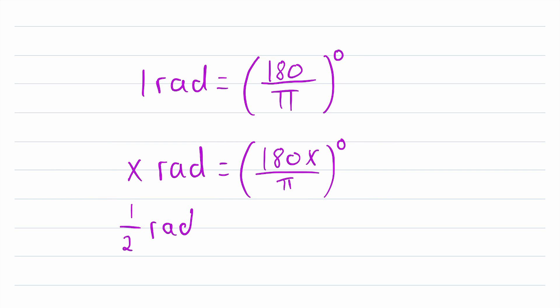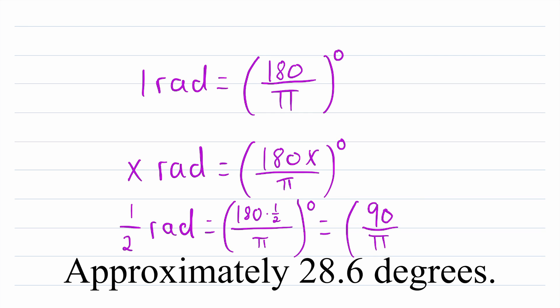So for example, what about 1 half of a radian? What's that equal to in degrees? Well, we know that that is equal to 180 multiplied by 1 half divided by π degrees. And then this is equal to 180 times a half is 90. So 90 over π degrees.